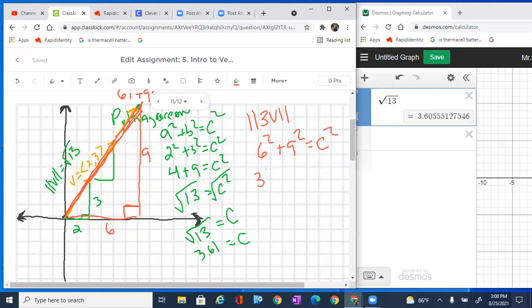So we get 6 squared, which is 36. We get 9 squared, which is 81 equals c squared. So we've got 36 plus 81, which is 117 equals c squared. And we could take the square root. Now that would be the magnitude of 3v or the length is going to be the square root of 117.